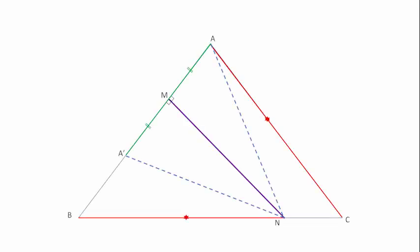We have an isosceles triangle ABC, so the angle ABC is equal to the angle BCA.